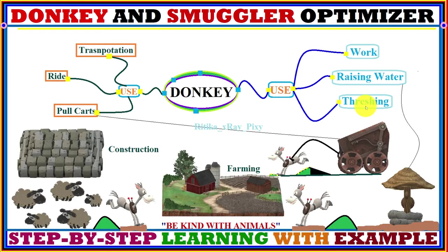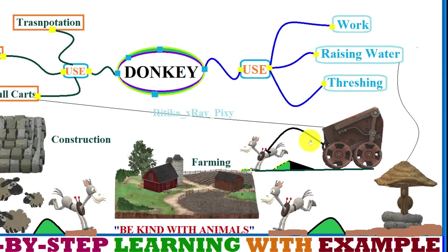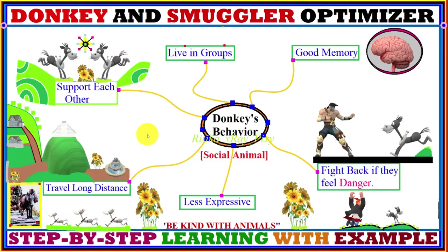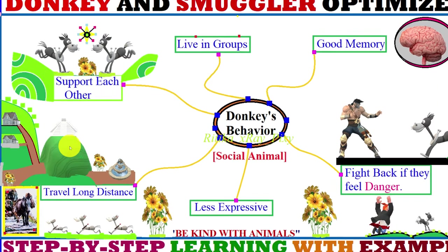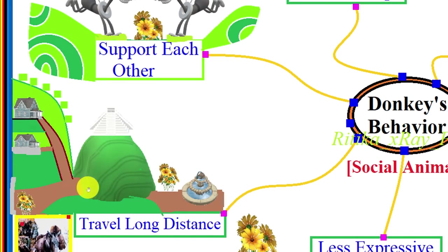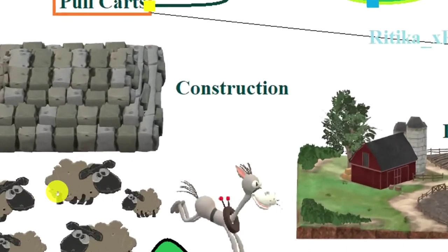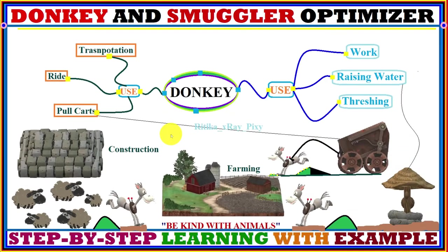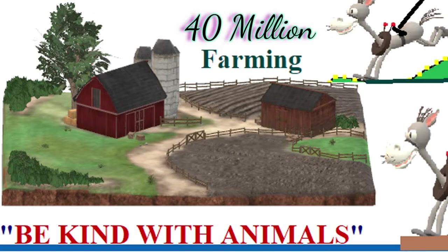Donkeys are used for threshing, transportation, farming, riding, and pulling carts. Donkeys can pull carts faster than oxen. Mainly they are used for construction work in hilly areas, where they carry heavy loaded goods to workers. In different countries they are also used to protect sheep herds from wild animals like wolves and foxes.